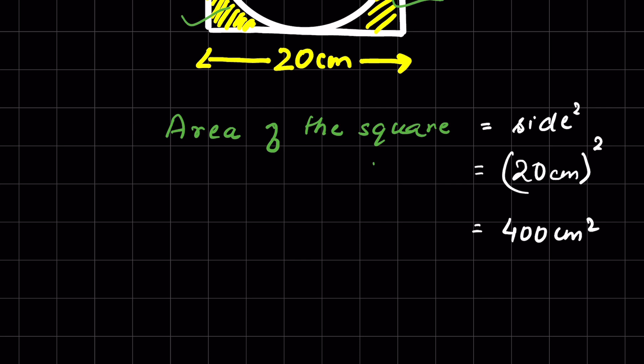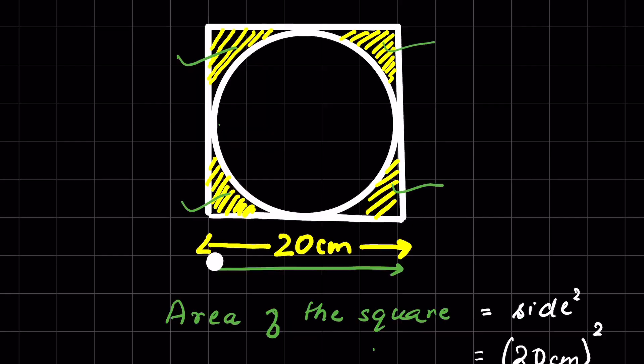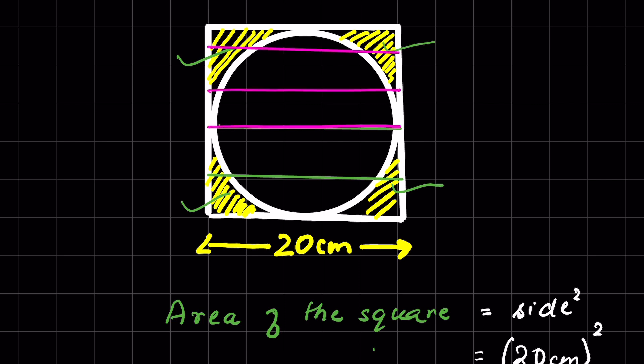Area of the circle, the formula is πr². Here the side of the square is 20 centimeters. When we draw a line anywhere between the sides, a straight line, these all are 20 centimeters. If this is 20 centimeters, that means this is the diameter of the circle.